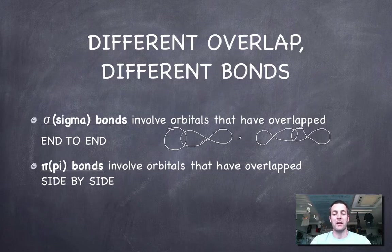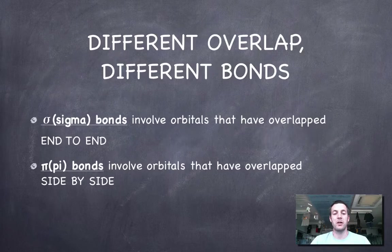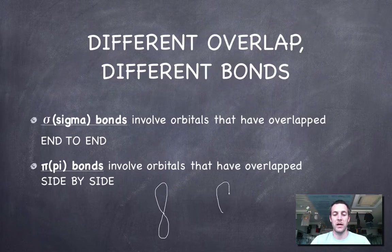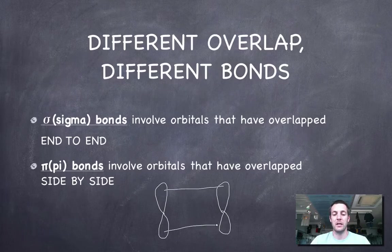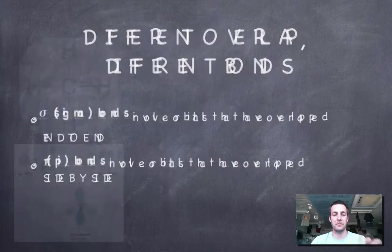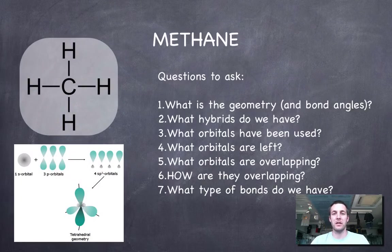A pi bond involves orbitals that overlap side by side. You can't get this with s orbitals because they're spherical, but if you had two p orbitals on neighbouring atoms in the right relation to one another, they could overlap here and here. That side-by-side overlap gives rise to a pi bond.